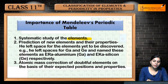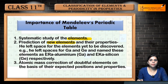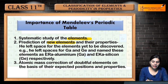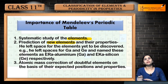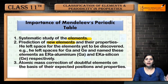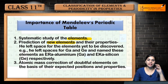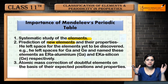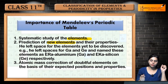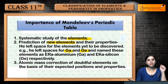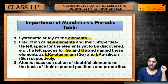The second importance is the prediction of new elements and their properties. It was easy to predict new elements because Mendeleev left spaces in the periodic table for elements yet to be discovered. He left spaces for gallium and germanium, calling them eka-aluminum for gallium and eka-silicon for germanium.